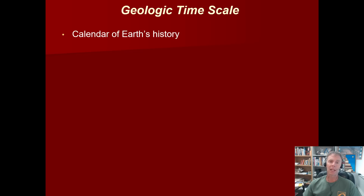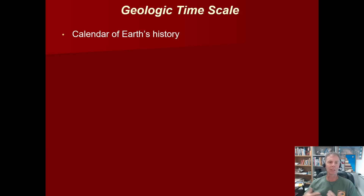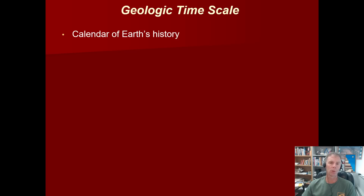It is ultimately rote memorization, but like a lot of things we learn, it's not that hard once you spend a little bit of time with it and wrap your head around it. If you're a student in my Geology 101 class, you need to actually memorize this because it's on an exam. Basically, it's a calendar of history — it's our way of referring to different periods of time instead of using a numeric value like 362 million years ago. Instead, we might just say the Devonian period.